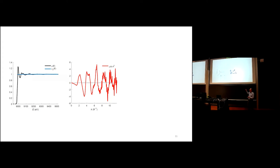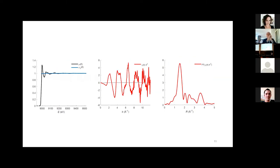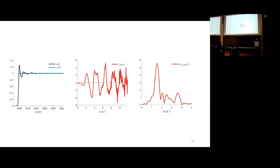The final thing I would like to introduce is the Fourier transform. You can perform a Fourier transform — a mathematical operation — on the chi signal, and you get a curve that tells you something about the distance to the nearest atoms and how many of those atoms there are. In rough terms, the height of the peak tells you how many atoms you have, and the x-axis tells you at what distance these atoms can be found.